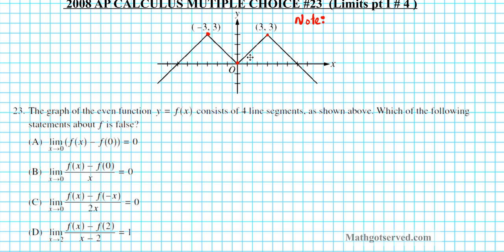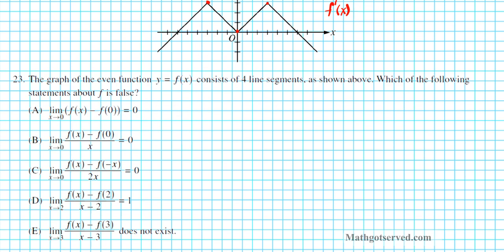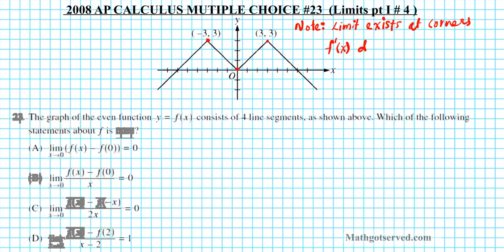If a function is continuous at a corner then the limit exists. So this is a continuous function, the limit exists at corners as long as the function is continuous at a corner. And then another thing you want to note is that f prime of x does not exist at corners. f prime of x does not exist at corners because the left and the right hand derivatives are different.